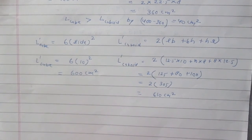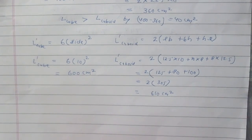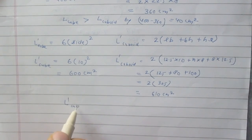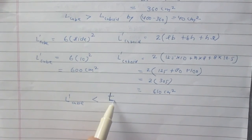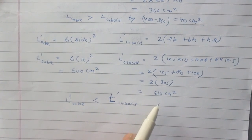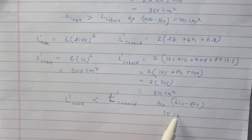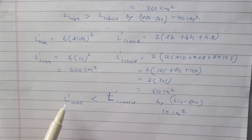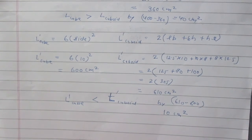In this case, you see that the total surface area of the cube is smaller than the total surface area of the cuboid. The total surface area of the cube is smaller than the total surface area of the cuboid by 610 minus 600, which is 10 cm².